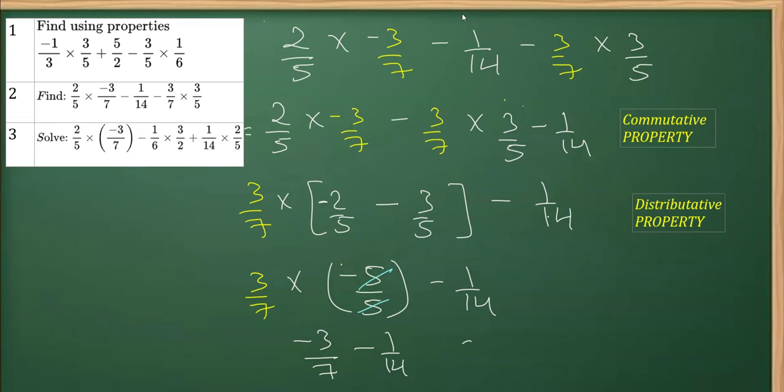Now for further solving we are going to take LCM and clearly the LCM is 14. So 7 times 2 and 2 times -3 is -6, and 14 times 1, so 1. So we finally get this as -7/14 which we can simplify further and write as -1/2.